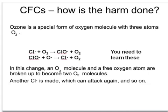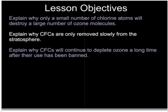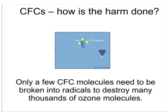An ozone molecule and a free oxygen atom are broken up to become two oxygen molecules, but another chlorine radical is made which can attack again and again and again. So one molecule of CFC breaking down to form one chlorine radical can then attack many, many ozone molecules, breaking them down to oxygen molecules. This depletes the ozone layer. Herein lies the problem: only a very small number of chlorine atoms from only a small number of CFC molecules breaking down can destroy a very large number of ozone molecules. This is not helped by the fact that these CFC molecules themselves are very, very stable and don't break down like many other molecules do in the upper atmosphere.